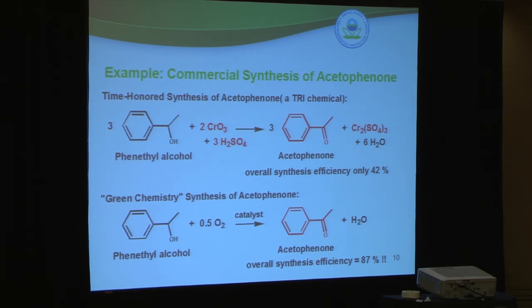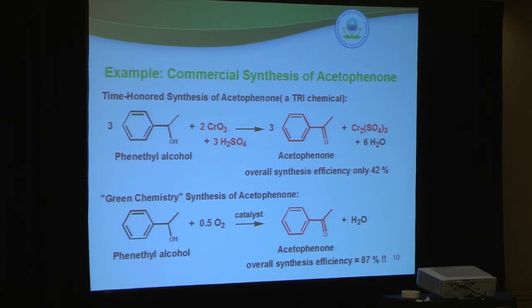A green way of making acetophenone is to simply start out with phenethyl alcohol and react it with molecular oxygen in the presence of a catalyst. You get your desired product without the use of chromium trioxide or sulfuric acid, and you don't generate any chromium sulfate waste. The overall efficiency of this reaction is almost 90%, so this is a very clean — or I should say green — way of making acetophenone. This is what green chemistry is.